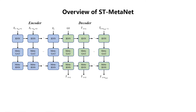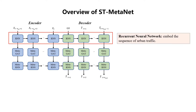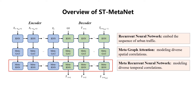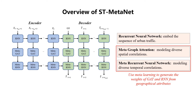In this work, we propose STMetNet, which adopts a sequence-to-sequence architecture. It has a RNN layer to embed the sequence of traffic, a meta graph attention layer to model diverse spatial correlations, and a meta-RNN layer to model diverse temporal correlations. In the meta graph attention and meta-RNN, we use meta-learning to generate network weights from geographical attributes.